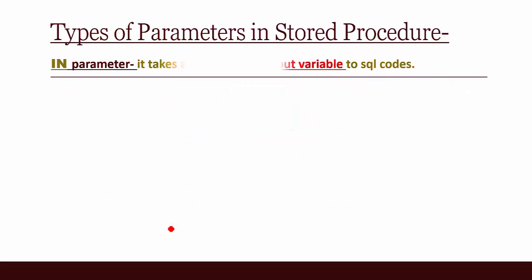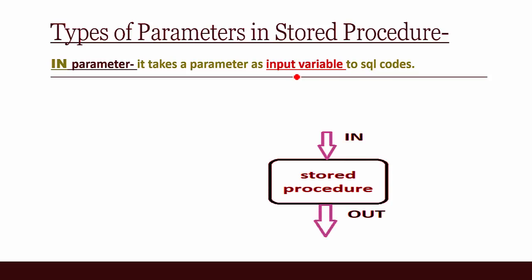There are three types of parameters in a stored procedure. The first is the IN parameter — this is a kind of variable. The IN parameter takes a value as input to the SQL codes. So for an IN parameter, you need to give a value to input into the stored procedure.